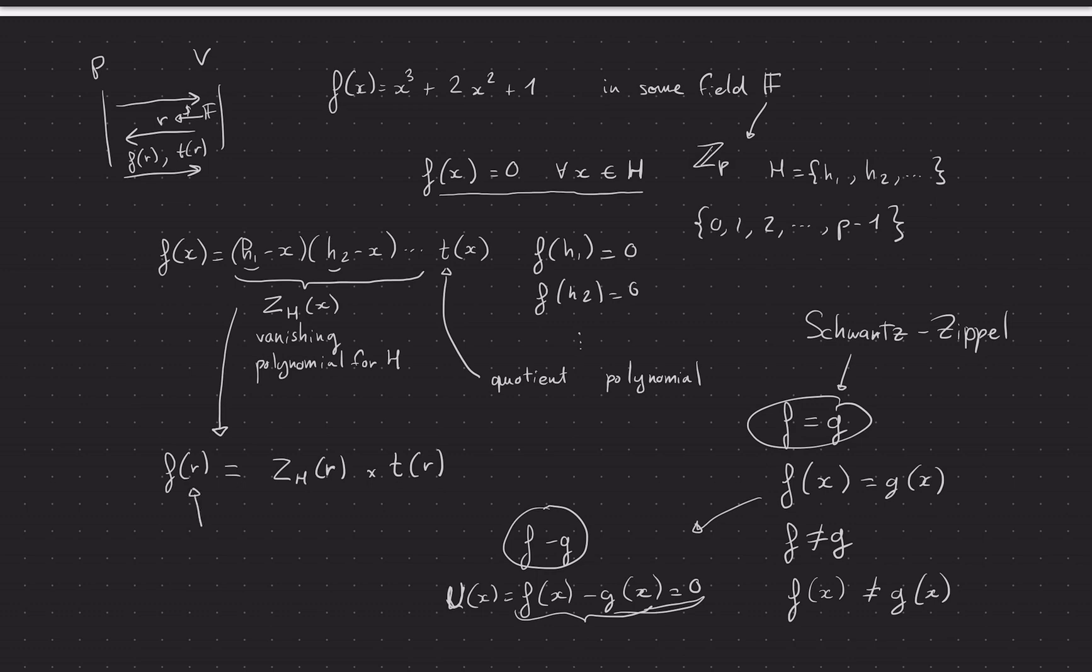And if this identity checks out, then I know that indeed f can be divided by the vanishing polynomial, which tells me that if you can divide it by this vanishing polynomial, then it must be that for all these points in the domain, f(x) equals zero.